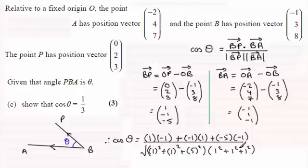And work this out, and you'll get on the top 3. On the bottom you'll have the square root of 81. And that comes to 3 over 9, which is 1 third. Which is what we had to show.